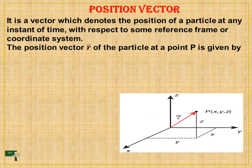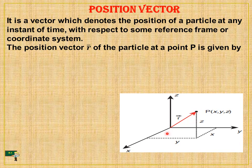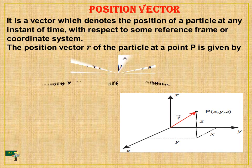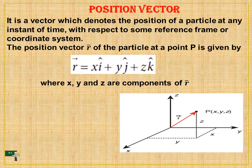Now, let's see what it denotes. It is a vector which denotes the position of a particle at any instant of time, with respect to some reference frames or coordinate system. These reference frames are X, Y, and Z. The position vector R of the particle at point P is given by R vector is equal to X i-cap plus Y j-cap plus Z k-cap. Here, X, Y, and Z are components of R vector.